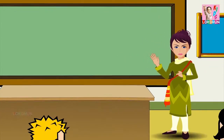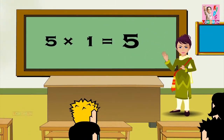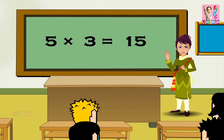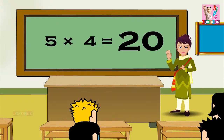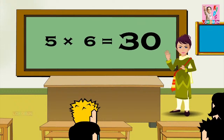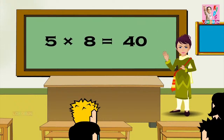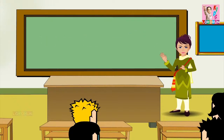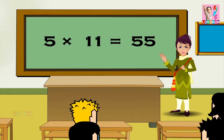5 1s are 5, 5 2s are 10, 5 3s are 15, 5 4s are 20, 5 5s are 25, 5 6s are 30, 5 7s are 35, 5 8s are 40, 5 9s are 45, 5 10s are 50, 5 11s are 55, and 5 12s are 60.